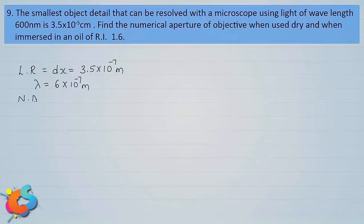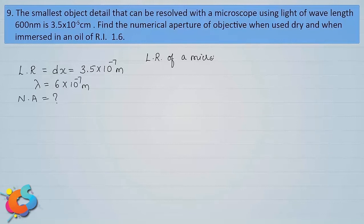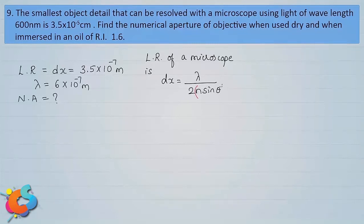We are supposed to find the numerical aperture, which is n·sinθ. Before that, let me write the expression for limit of resolution of a microscope: DX = λ / (2n·sinθ), where the quantity n·sinθ is the numerical aperture — a measure of the amount of light that enters the objective of the microscope.